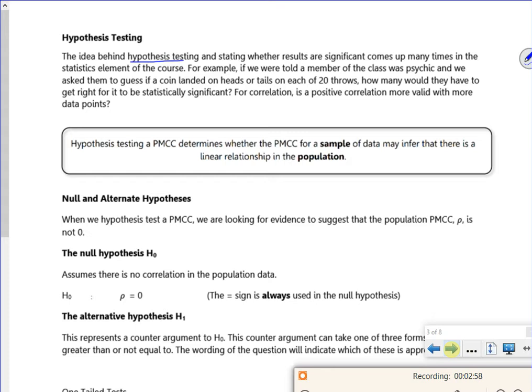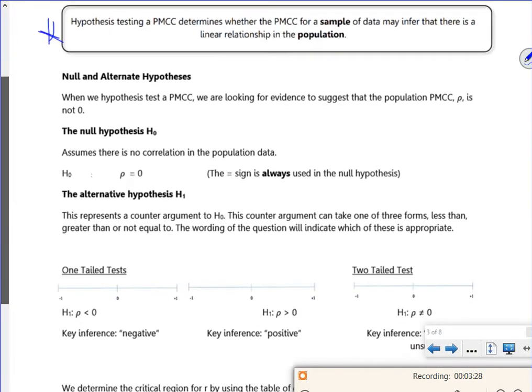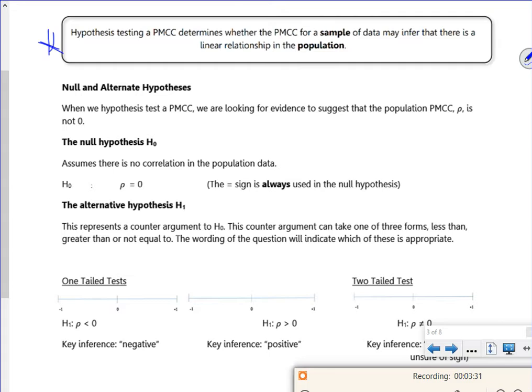So hypothesis testing and significance comes up many times in stats. It says, if we were told a member of the class was psychic and we asked them to guess if a coin landed on heads or tails on each of the 20 throws, how many would they have to get right to be statistically significant? So that's the kind of testing we would do. PMCC looks at the linear relationship, which we kind of know because the R number correlation you've done at school has only ever been for linears.